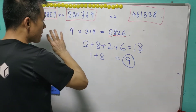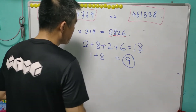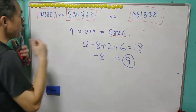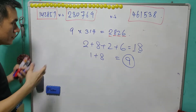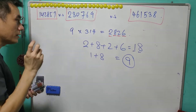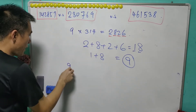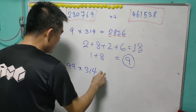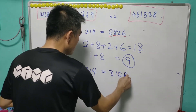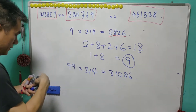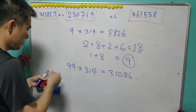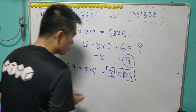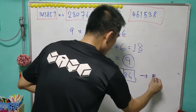We can do the same thing for two digits using 99. For 99 times 314, the result is 31086. When you separate this into two-digit blocks — two digits, two digits, two digit — and add them up, you will get 9999.